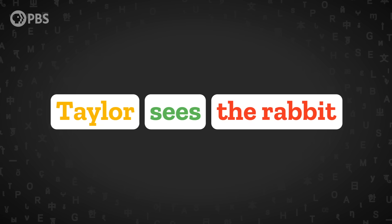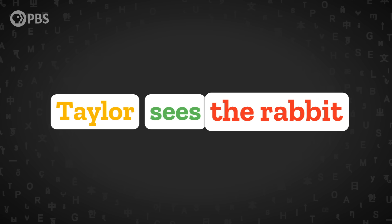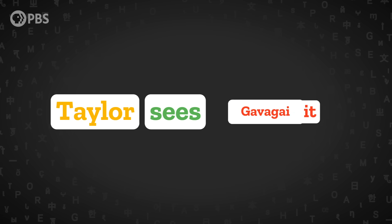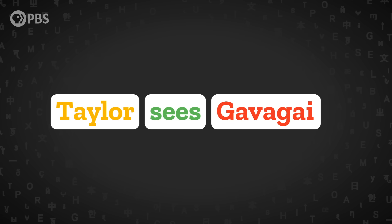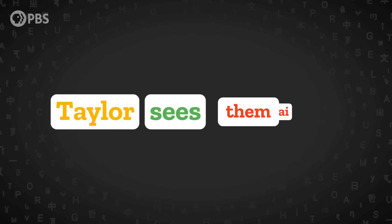I'm Taylor and welcome to Crash Course Linguistics! In episode 3 we learned about how to test which parts of a sentence are constituents, or closely related subgroups of words. So in the sentence 'Taylor sees the rabbit,' we know 'the rabbit' is one such constituent because we can substitute it for a single word or pronoun, like 'gabagai' or 'them.'